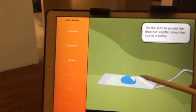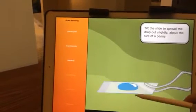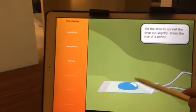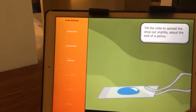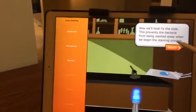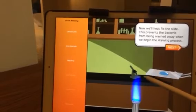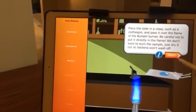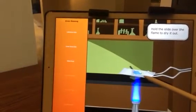Tilt the slide to spread the drop out slightly, about the size of a penny. Now we'll heat fix the slide. Place the slide in a clamp and hold the slide over the flame to dry it out.